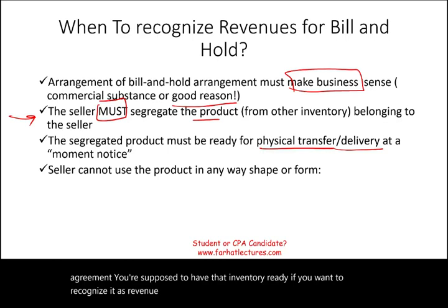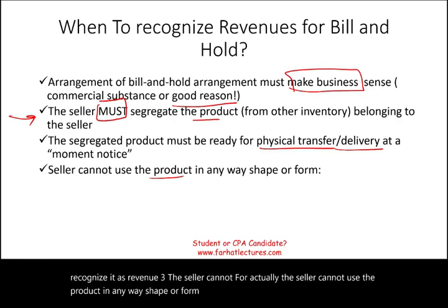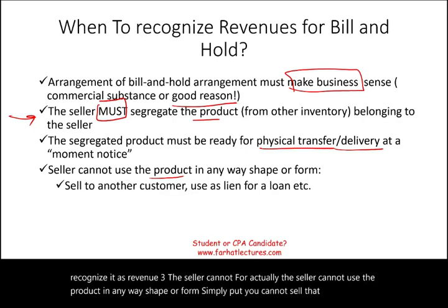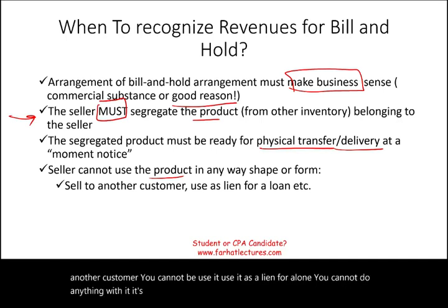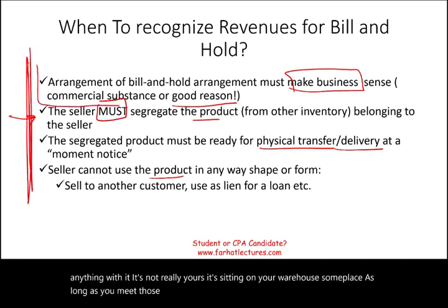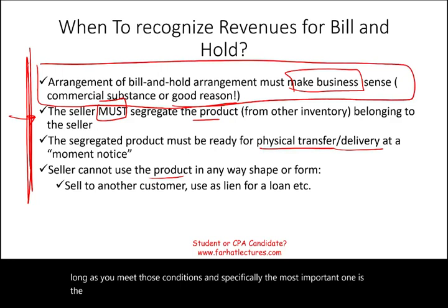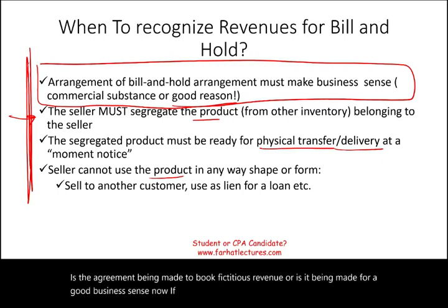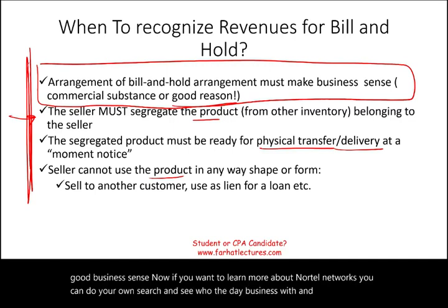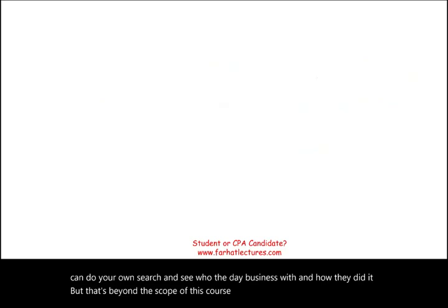Fourth, the seller cannot use the product in any way, shape, or form. Simply put, you cannot sell that product to another customer, you cannot use it as a lien for a loan, you cannot do anything with it — it's not really yours, it's sitting in your warehouse. The most important condition is the first one: is the agreement being made to book fictitious revenue, or does it make good business sense?